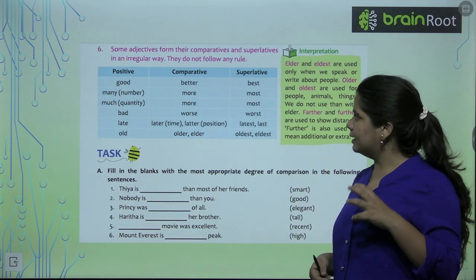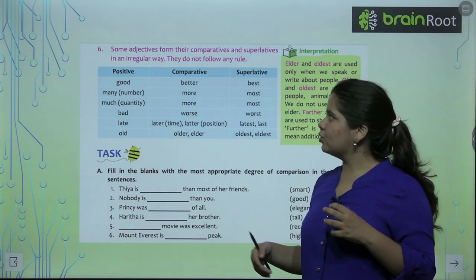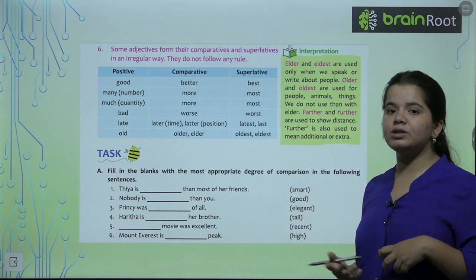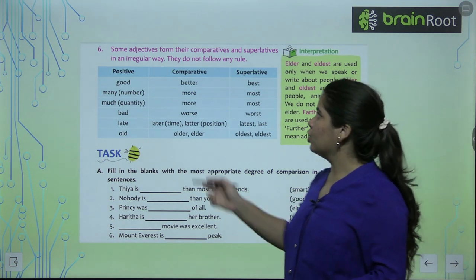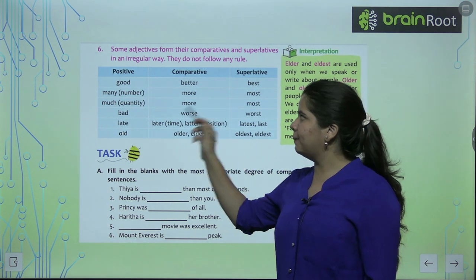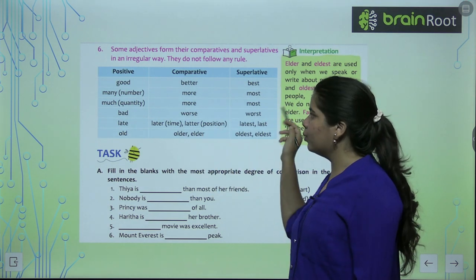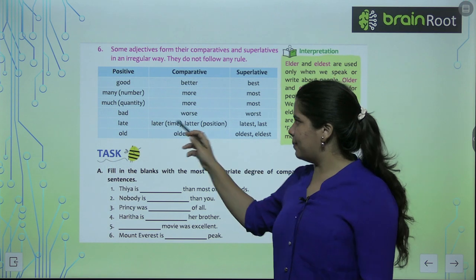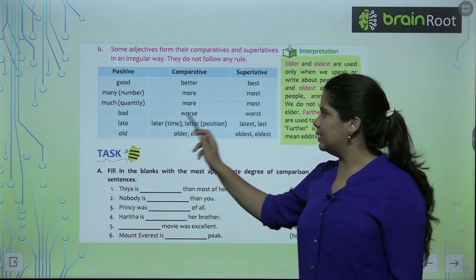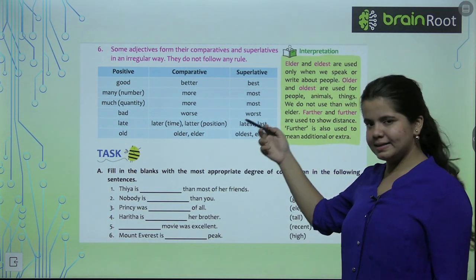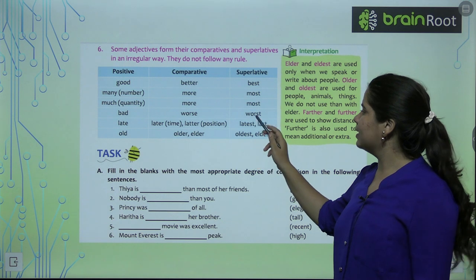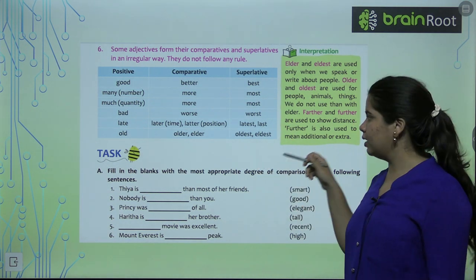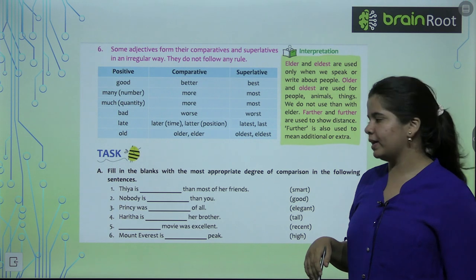Next, some irregular forms have no rule — you just have to memorize them. Good, better, best. Many, more, most. Much, more, most. Bad, worse, worst. Late, later, latter — you can also write latest and last. Old, older, oldest.